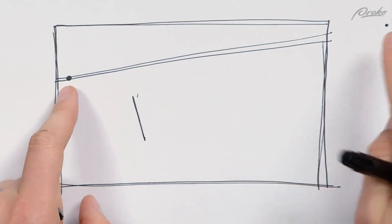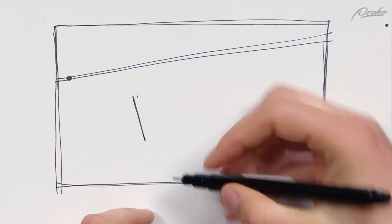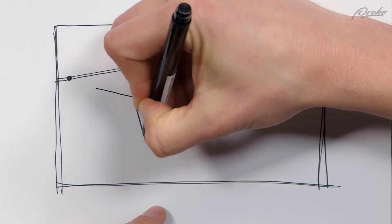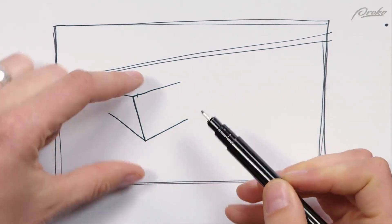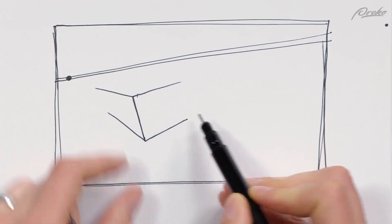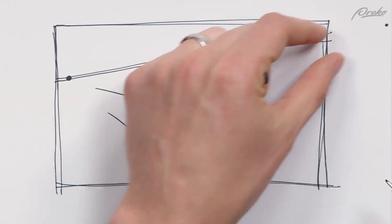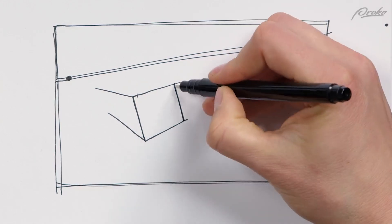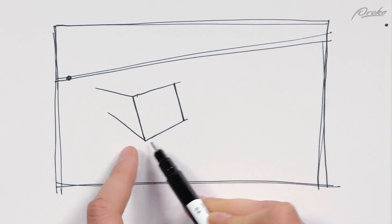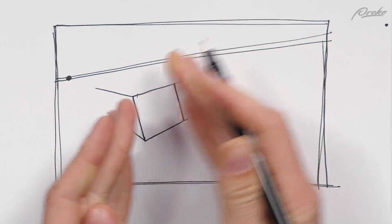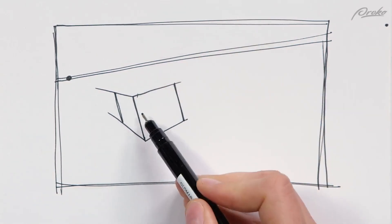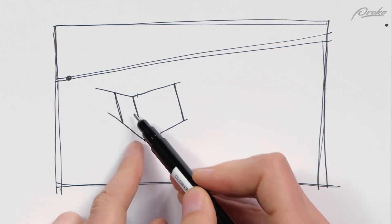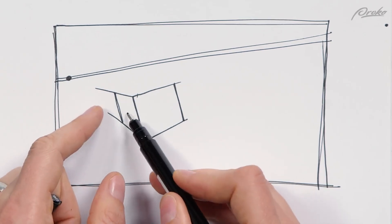When the vanishing points are very different distances — one really close, one really far — the plane with the close vanishing point converges quite a bit, getting smaller really fast. The other plane, with the distant point, barely converges — it stays fairly parallel because it takes much longer to reach its point, so it looks more like a square. The foreshortened plane is visibly shorter, but the illusion is that these two planes are actually the same size. Perspective is all just an illusion.